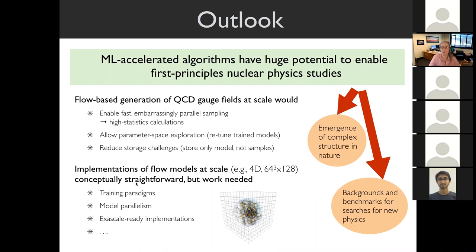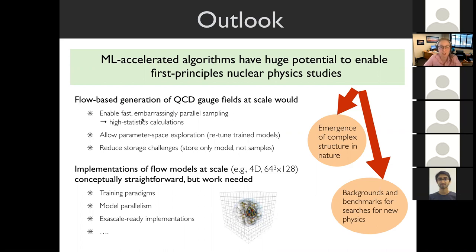The big physics goals are being able to do calculations that let us understand nuclear physics from first principles, both to understand nuclear physics itself and to constrain searches for new physics beyond the standard model. The big challenges are training paradigms for very large models where every sample is tens or hundreds of gigabytes, and making models and training paradigms ready for exascale hardware. Flow-based generation of gauge fields would enable fast, embarrassingly parallel sampling and high-statistics calculations. We've also found you can retune trained models to nearby parameter sets, giving a handle on parameter space exploration for little extra training cost.